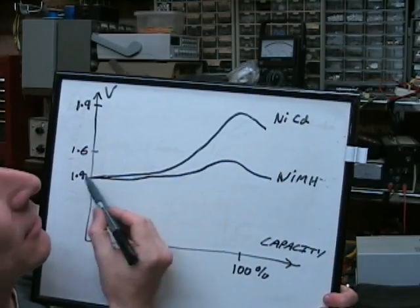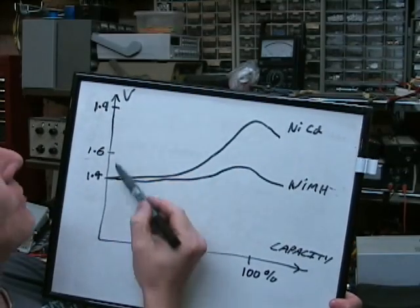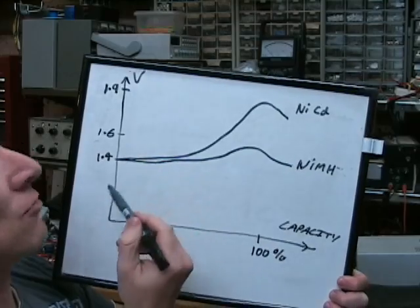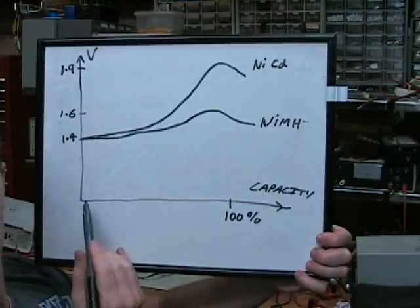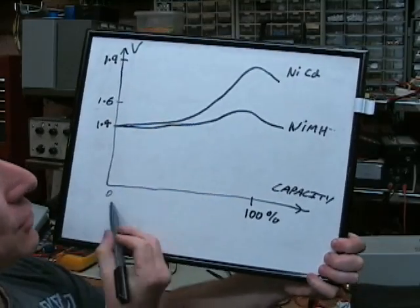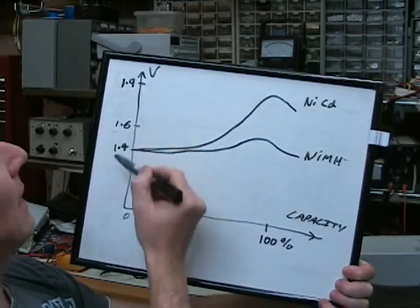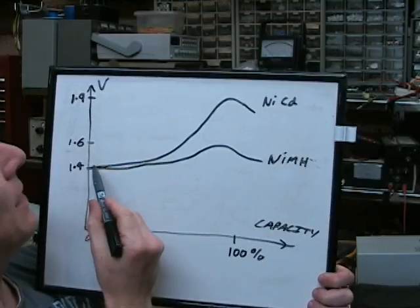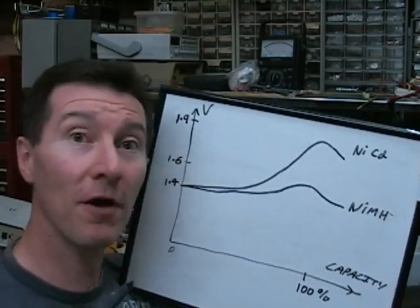This is the NiCad curve and this is the nickel metal hydride curve. And what it is is it's the charge voltage because it's a constant current, the voltage across the battery changes with charge. And this is 0 to 100% battery capacity and this is the voltage across the cell when you pass the constant current charge through. And as you can see they're two entirely different voltage profiles.